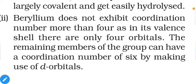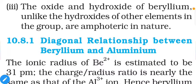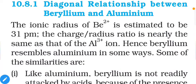The oxide and hydroxide of beryllium, unlike those of other elements in the group, are amphoteric in nature. Other group members show basic nature, whereas oxides and hydroxides of beryllium show amphoteric nature — meaning both acidic and basic behavior.